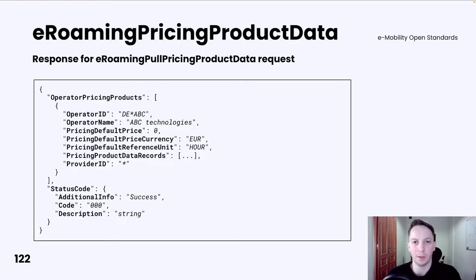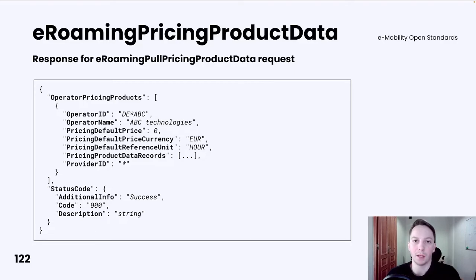As an EMP, based on that information you only know what kind of pricing products a given operator offers. You still do not know how to apply them to specific EVSEs — that information is part of the next operation.